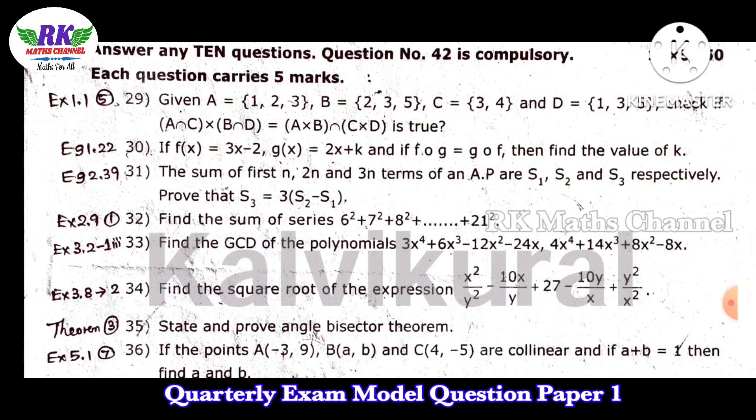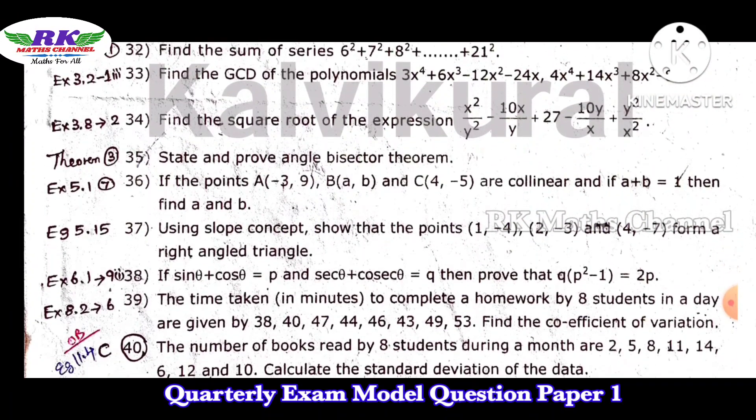For next question number 32, find the sum of series, geometric, sorry, special series concept, 6 square, 7 square, 8 square up to 21 square. Sum of squares of first natural numbers, that formula n into n plus 1 into 2n plus 1 by 6, that formula use. Question number 33, GCD of polynomials. But in GCD problem you can see a little problem. Exercise 3.2, find the square root. Actually square root problem important, and now in 2022 this model is not a question, normal questions you can see square root.